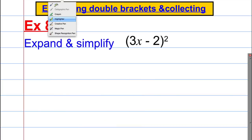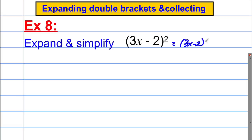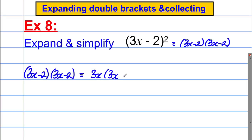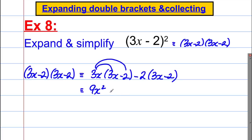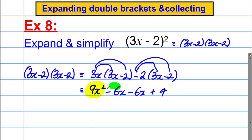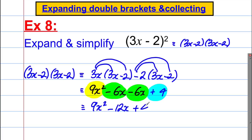Last example: (3x subtract 2) all squared means (3x subtract 2) multiplied by (3x subtract 2). Write as 3x multiplied by the second bracket, subtract 2 multiplied by the second bracket. Expanding: 3x times 3x is 9x squared, 3x times negative 2 is negative 6x, negative 2 times 3x is negative 6x, and negative 2 times negative 2 is positive 4. Collecting like terms: 9x squared subtract 12x add 4.